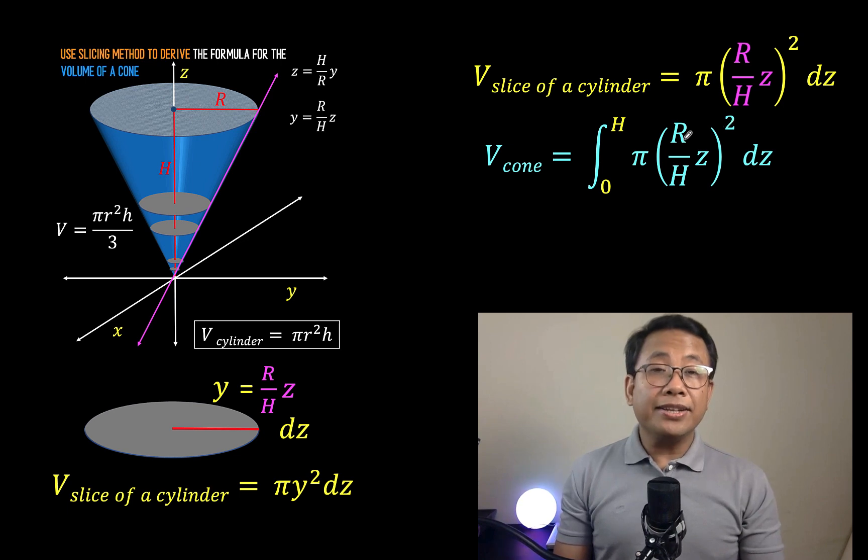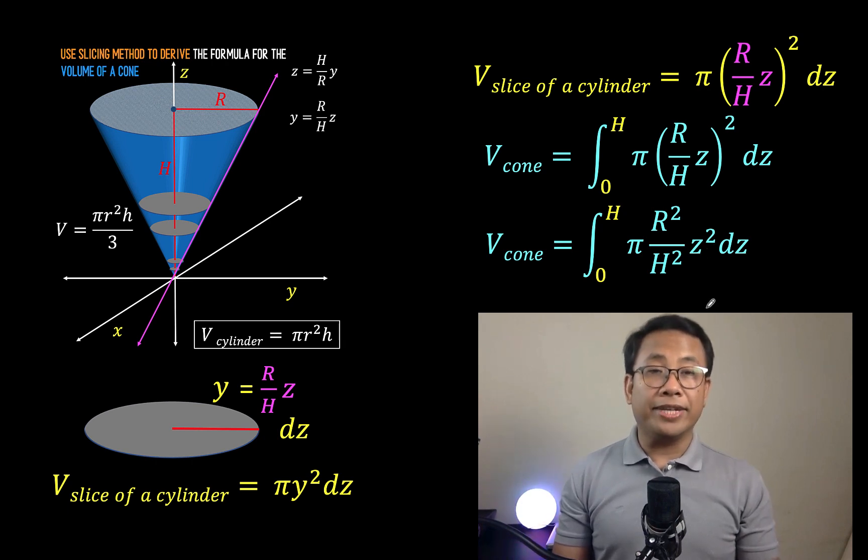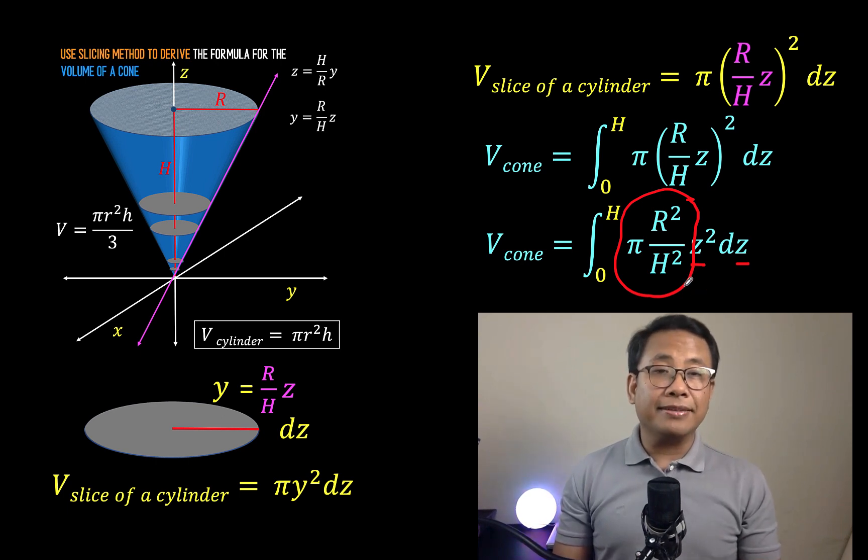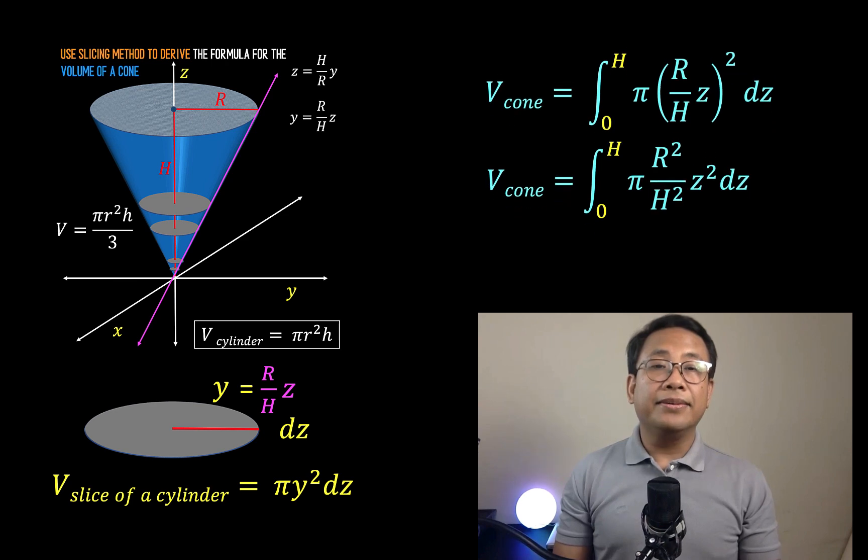We have here an exponent. So let's simplify this part to arrive at r squared over h squared times z squared and copy all the rest. Our variable of integration is z. So z is a variable here, but this part here, pi r squared over h squared, this is just a constant. So we can pull this out of the integration symbol.